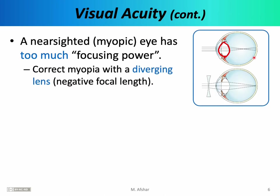To correct for this condition, we prescribe a diverging lens for the myopic eye. Recall that a diverging lens has a negative focal length. The negative focal length of the diverging lens essentially pushes the focal point of the eye further back so that it coincides with the retina.